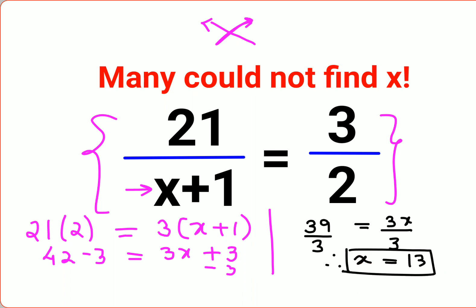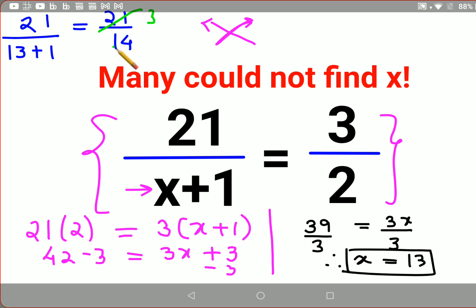For those who want to verify, let's check this. We have 21 divided by (13 + 1), which gives 21 divided by 14. Both of these go into the 7 table: 7 times 3 is 21 and 7 times 2 is 14.